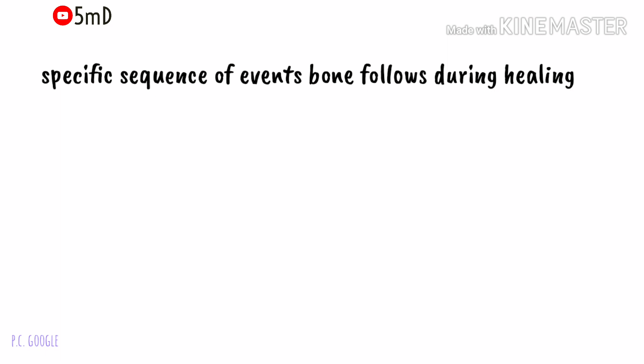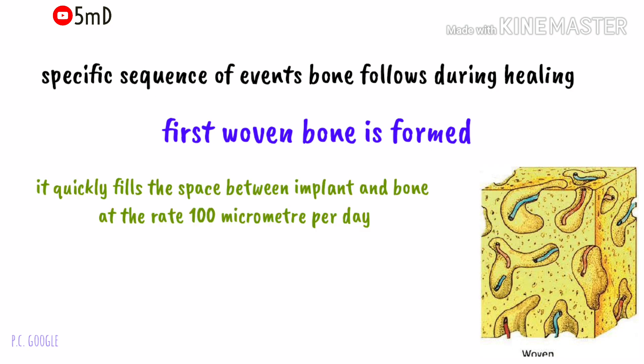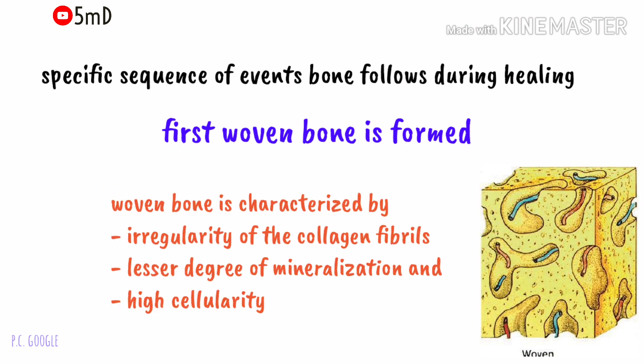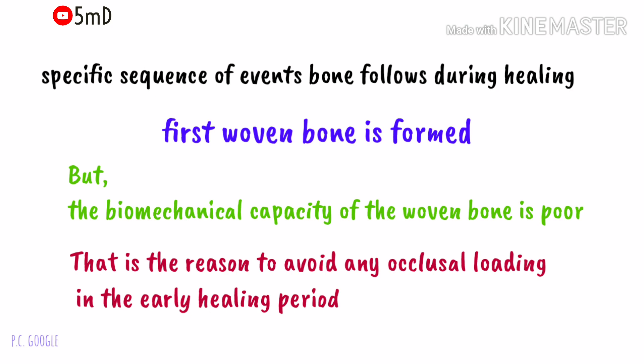The first bone to be formed is woven bone. It is quickly formed in the gap between the implant and bone, growing at 100 micrometers per day in all directions. The characteristics of woven bone include irregularity and random orientation of the collagen fibrils, high cellularity, and a limited degree of mineralization. The disadvantage of woven bone is that its biomechanical capacity is really poor — that is why we avoid any occlusal load in the early periods.